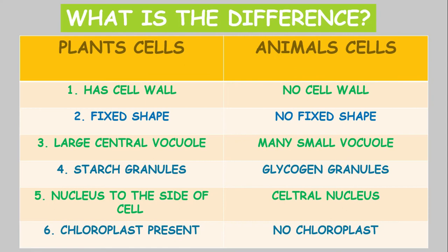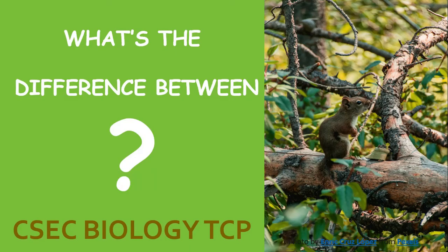The plant cell has chloroplasts which helps it to carry out photosynthesis. The animal cell does not have chloroplasts, hence the inability of the animal cell to carry out photosynthesis.